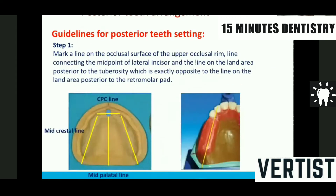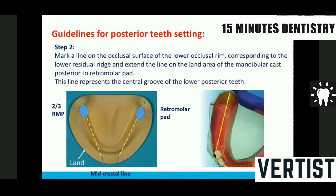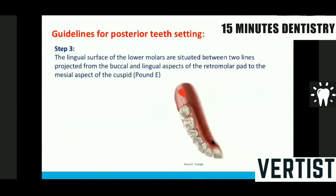To make it simple: two lines are drawn on the occlusal rim. First line from the center of the lateral incisor to the land of the cast — this denotes the upper palatal cusps. Second line from the distal slope of the canine to the land of the lower cast — this denotes the central groove. The third principle is Pounds' principle or Pounds' triangle: draw a triangle from the mesial, buccal, and lingual of the retromolar pad joining the mesial tip of the canine. All lower teeth cusps should fall within this triangle.